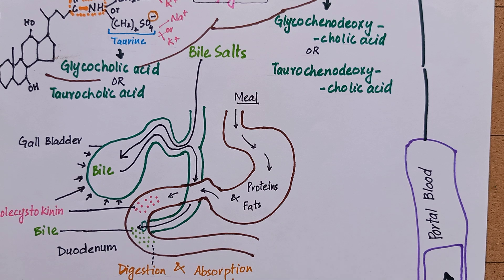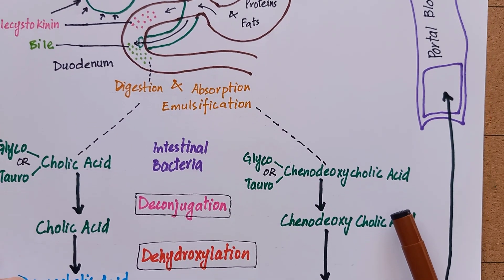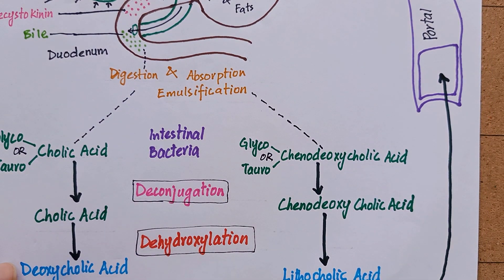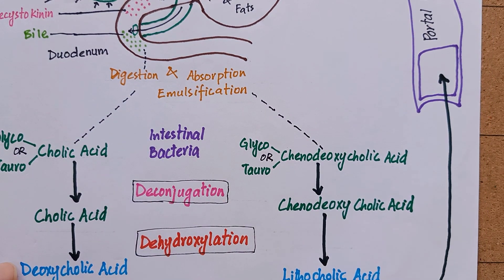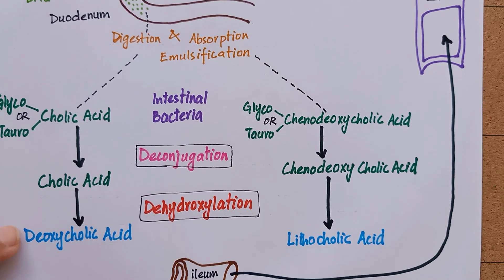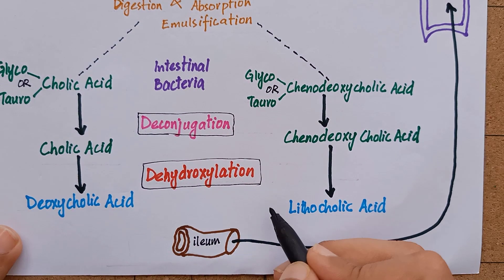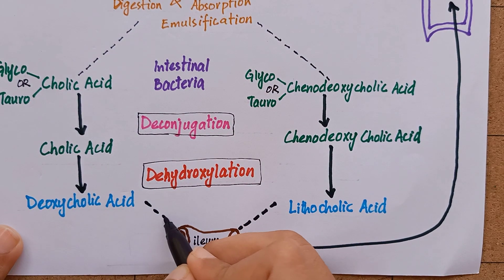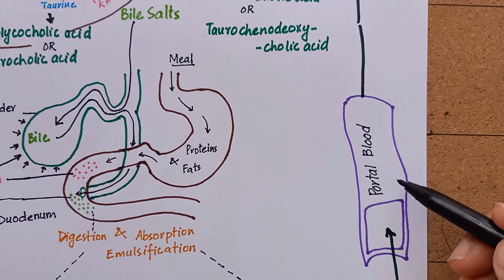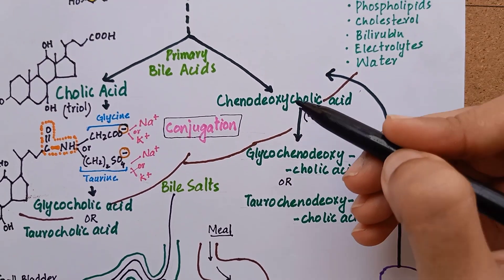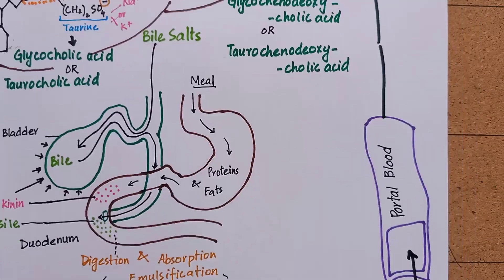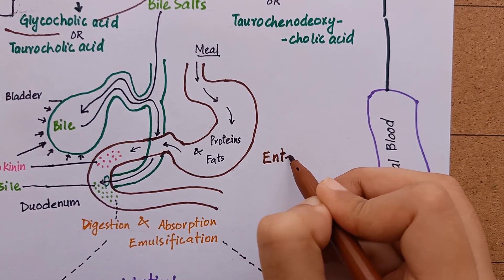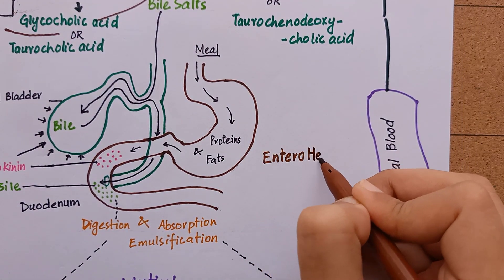This continuous process of excretion of bile salts into the bile, their passage through the duodenum where some are converted to bile acids, their uptake in the ileum, and their subsequent return to the liver as a mixture of bile acids and bile salts is termed enterohepatic circulation.